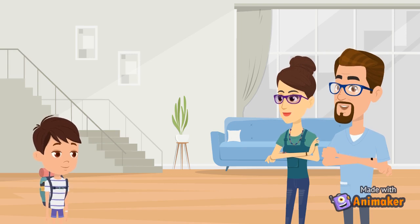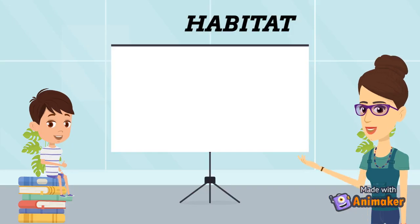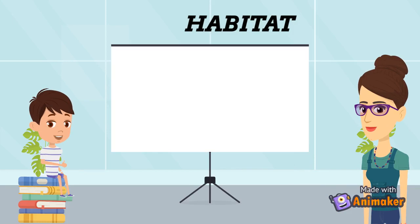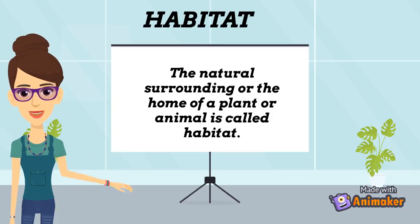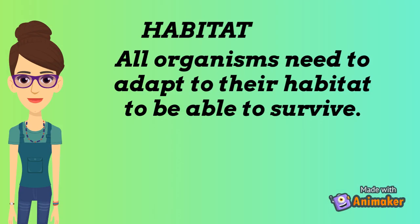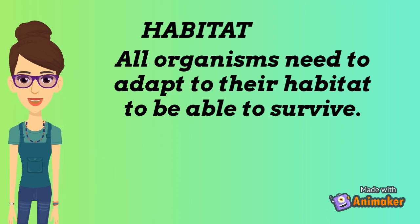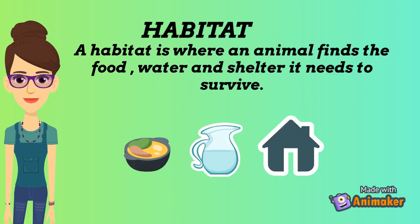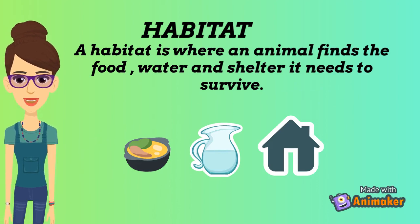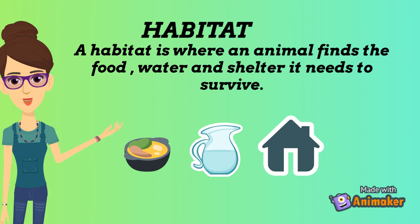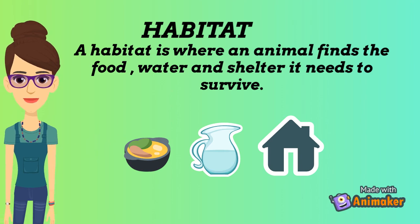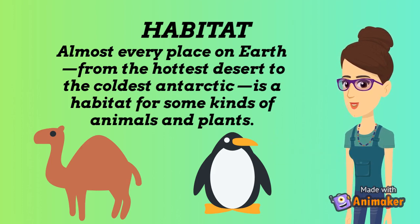You have to balance between study and playing. So our topic is Habitat. The natural surrounding or the home of a plant or animal is called Habitat. All organisms need to adapt to their habitat to be able to survive. A habitat is where an animal finds the food, water and shelter it needs to survive. Almost every place on Earth, from the hottest desert to the coldest Antarctic, is a habitat for some kinds of animals and plants.